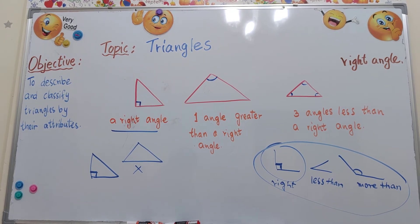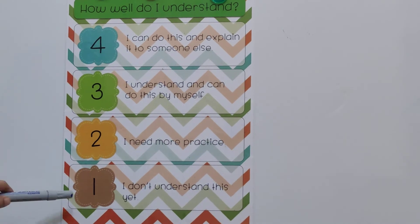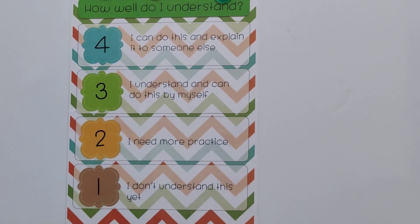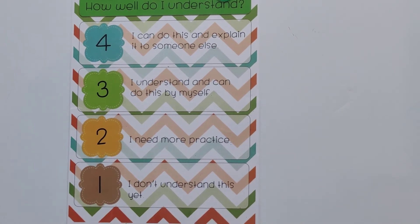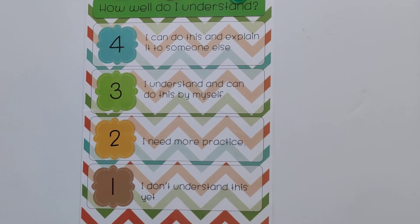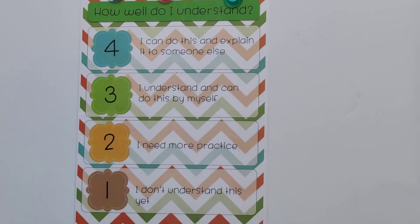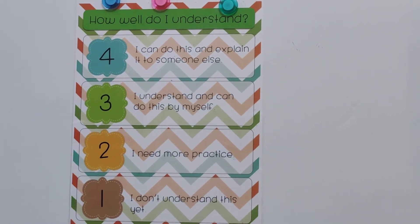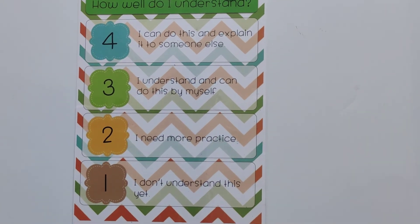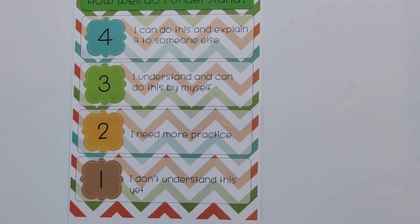Now let's grade your lesson. How well do you know the lesson, starting from 1 to 4? If you choose number 1, you don't know the lesson and need to watch the video again. Number 2 means you need a little bit of practice. Number 3 means you know the lesson and can do it by yourself. Number 4 means you know the lesson, can do it by yourself, and explain it to someone else — which is great and awesome.